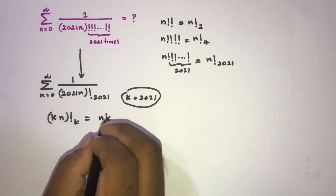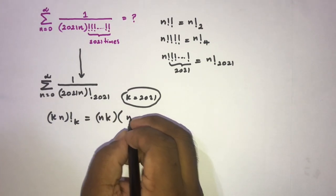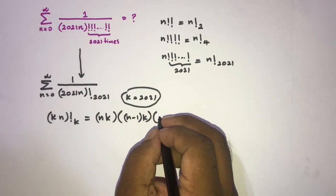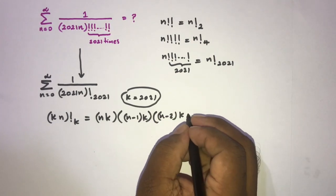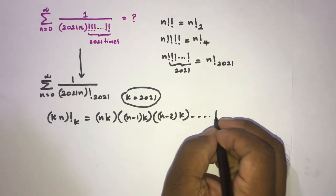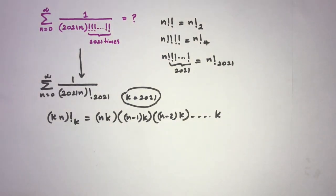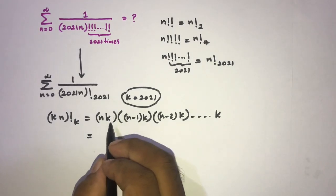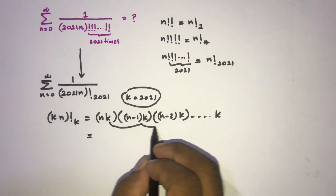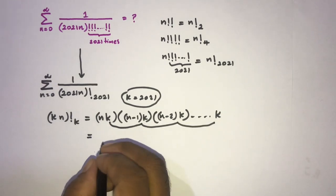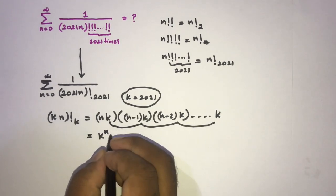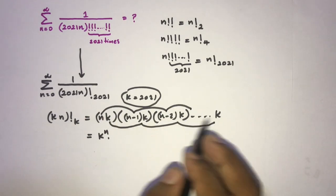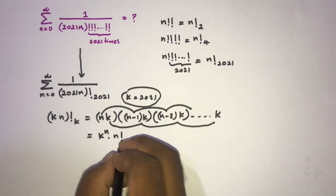Now we can simplify (n factorial) to the k. This expands as: k*n times (k*(n-1)) times (k*(n-2)) down to k. Factoring out, we get k to the n times n factorial, since k appears n times and the remaining terms give n factorial.